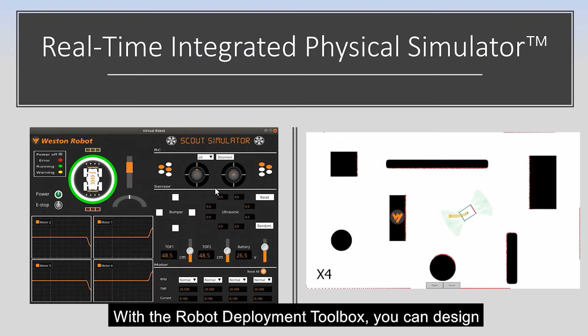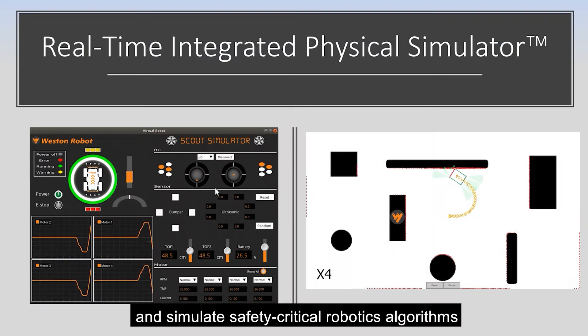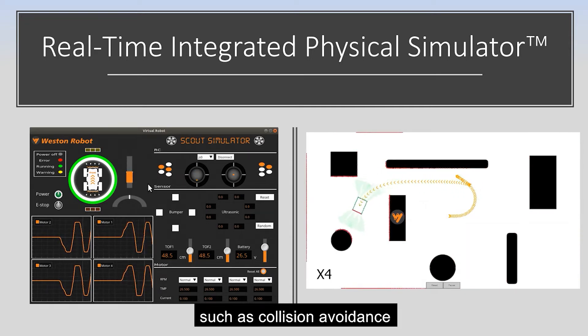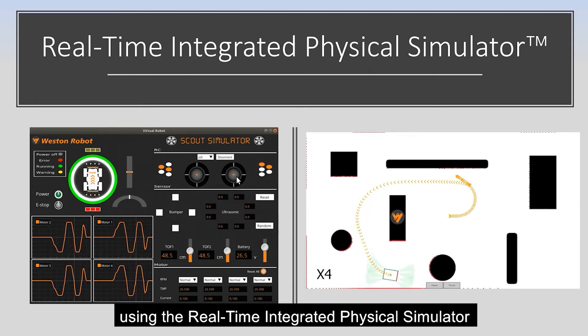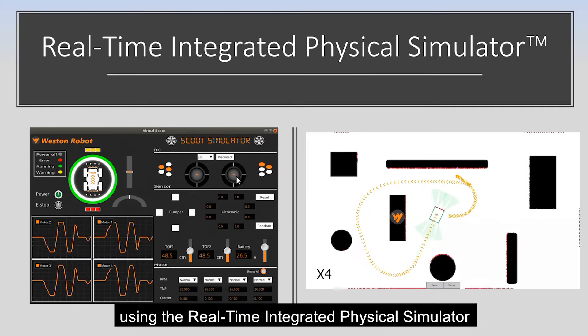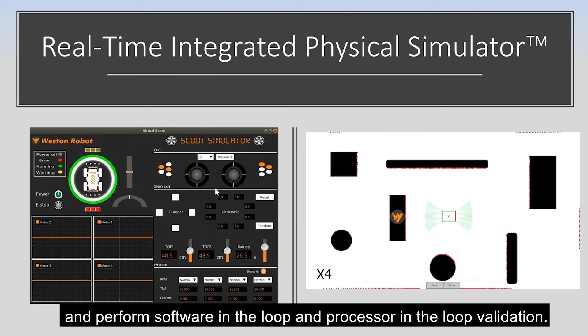With the Robot Deployment Toolbox, you can design and simulate safety-critical robotics algorithms, such as collision avoidance, using the real-time integrated physical simulator, and perform software-in-the-loop and process-in-the-loop validation.